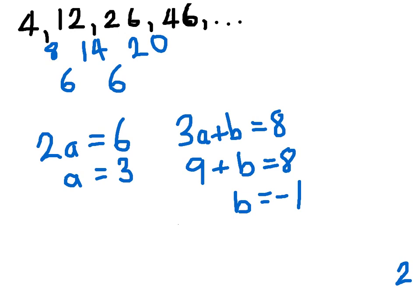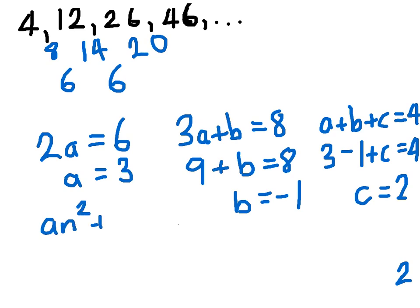And finally, we have that a plus b plus c equals 4. We already know what a is. We already know what b is. So we have 3 minus 1 plus c equals 4. And so therefore, c must equal 2. So we've got that a is 3, b is minus 1, and c is 2. So putting that into the general form, that was an squared plus bn plus c. We have 3n squared minus n plus 2.